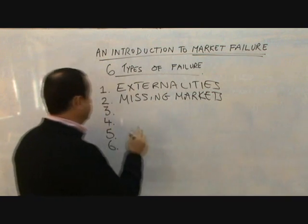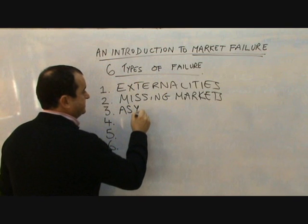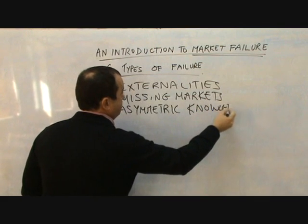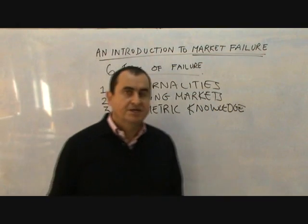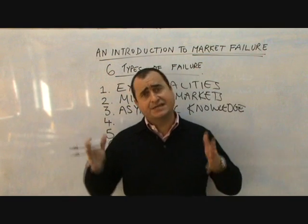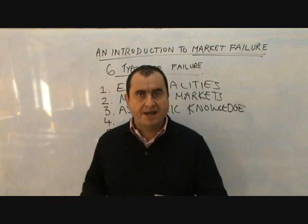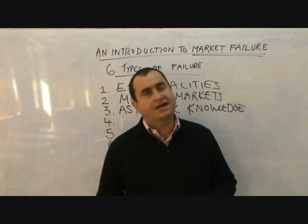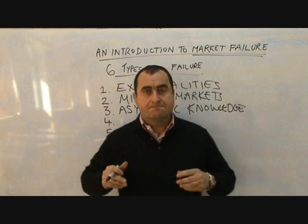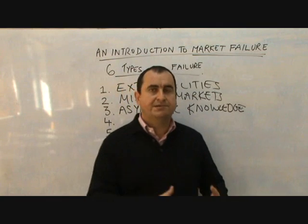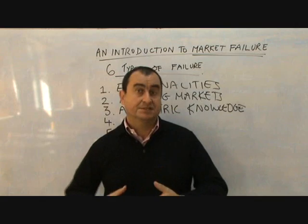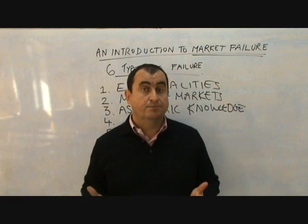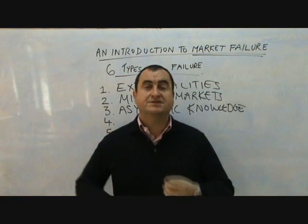Our third kind of market failure is asymmetric knowledge. Asymmetric knowledge exists when there is a lack of symmetry or balance between the knowledge of the buyer and the knowledge of the seller, and the imbalance gets exploited and leads to a misallocation of resources. Most of the time this happens when the supplier has superior knowledge to the buyer and exploits that superior knowledge, causing the buyer to allocate more resources — meaning spend more money on the good — than is best for them.